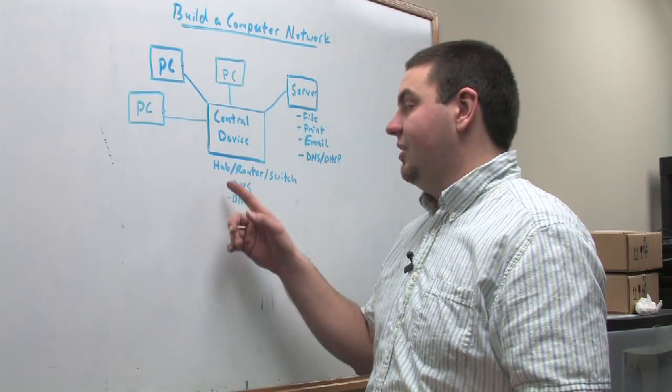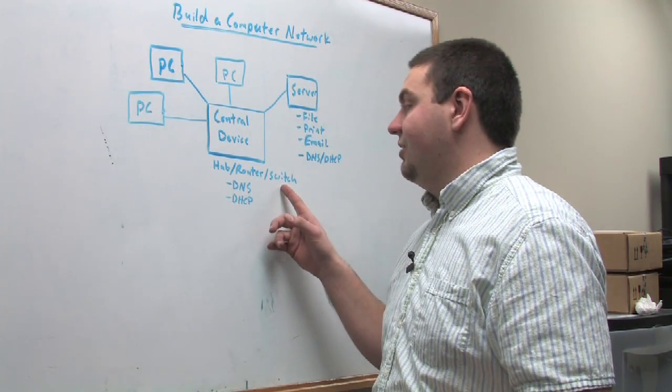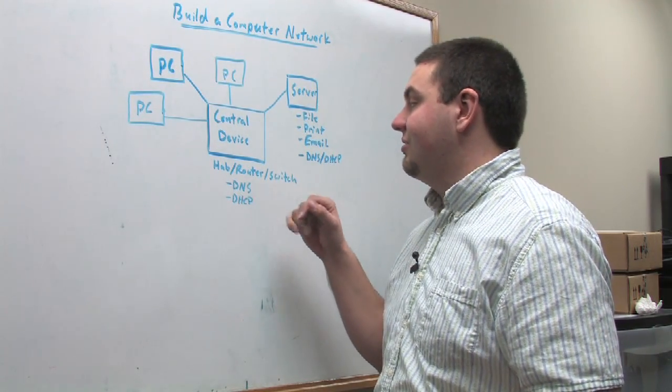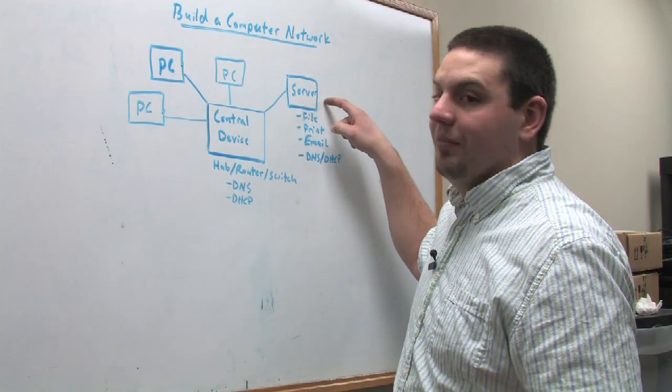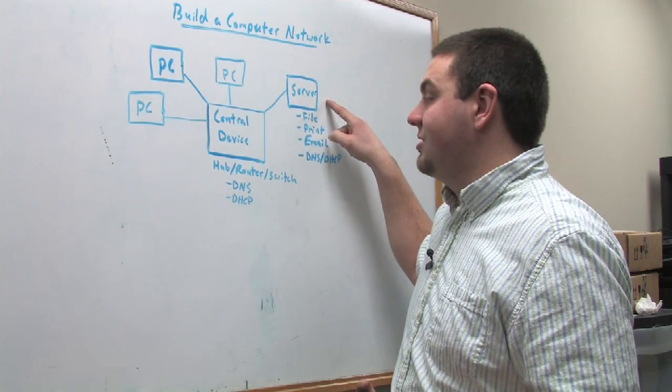In the instance of using a hub and a switch, you would then have to allocate DNS and DHCP to a third device, otherwise known as a server, typically.